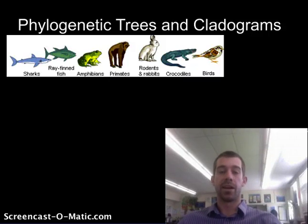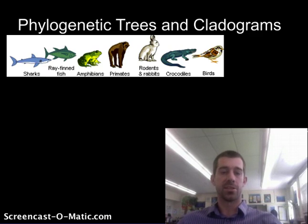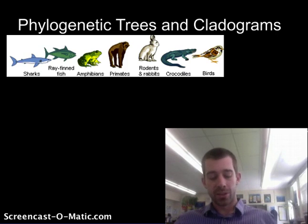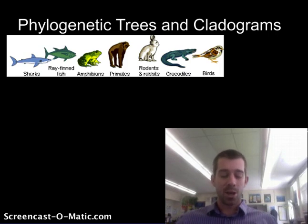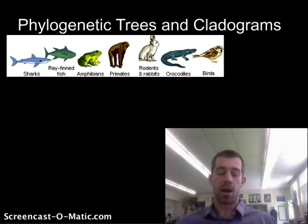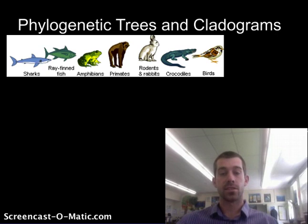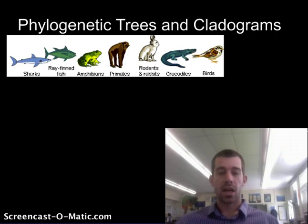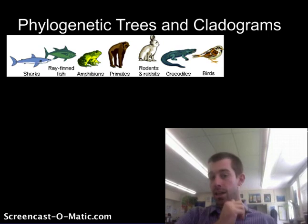Today we're going to be learning about how to draw one diagram that often has two different names — it's either called a phylogenetic tree or a cladogram. Both of those are really complicated names, but basically the idea is that these are graphic representations, or a model, of the history of evolution. We can actually test these models to see if they really tell the story of evolution. So we're just going to jump right in and try to do an example of a phylogenetic tree for these animals here.